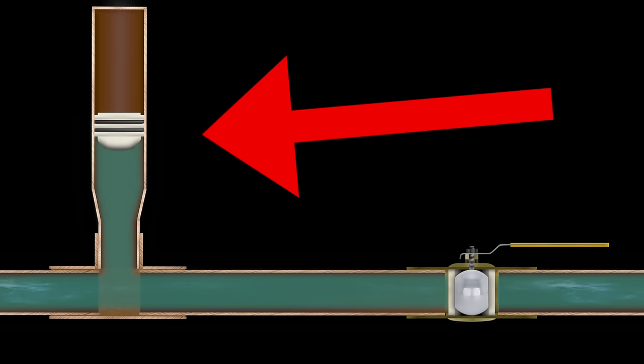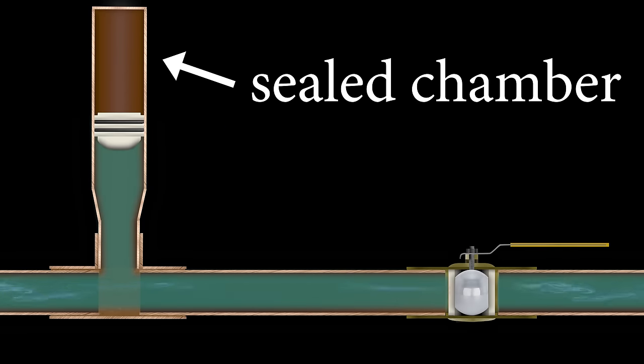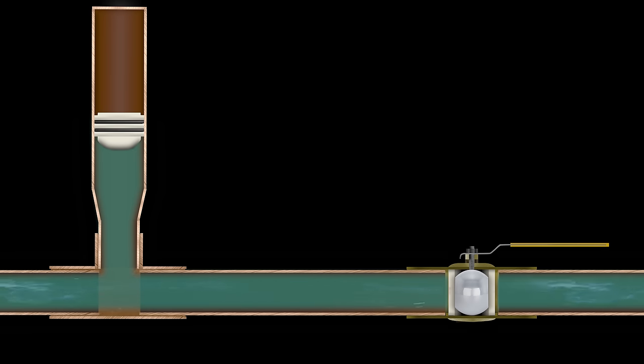This is where these come into play. These engineered hammer arresters are specifically designed to seal the air chamber from the water thanks to the two sealing o-rings on the polypropylene piston.